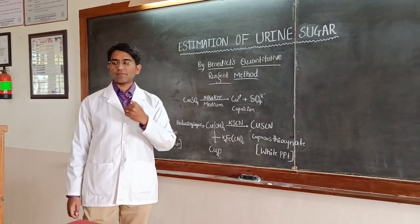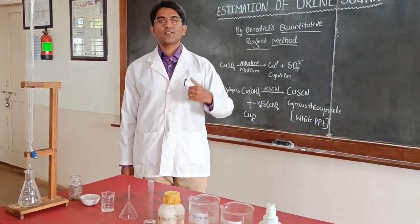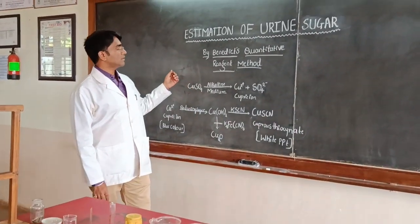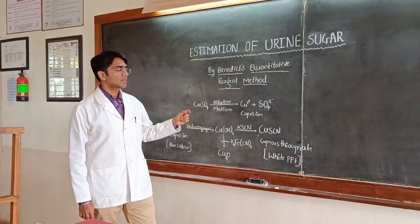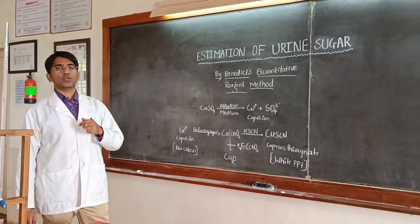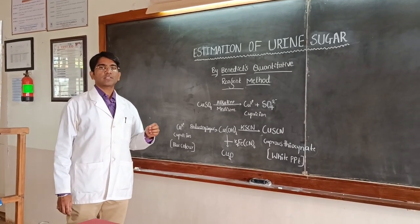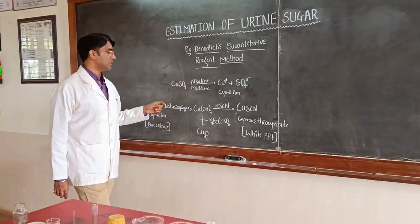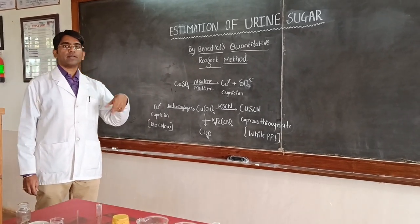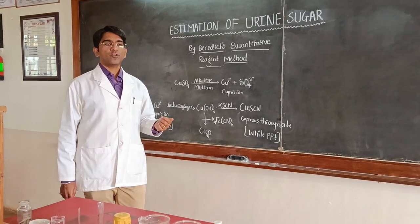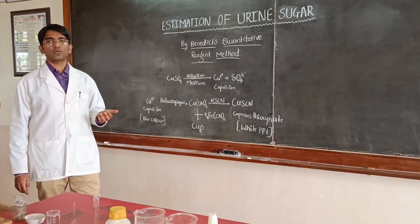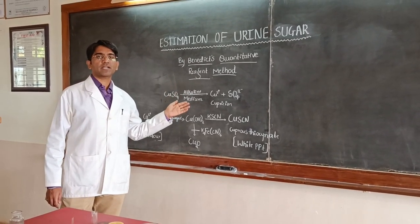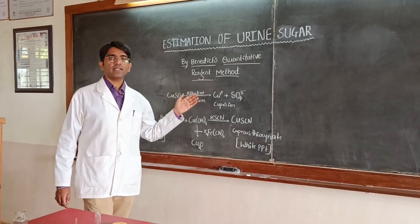Coming to the principle involved in Benedict's quantitative reagent method for identifying urine sugar: in this method, the reducing property of glucose is made use of. The glucose present in the urine sample reduces copper sulphate to cuprous oxide. This cuprous oxide produced further reacts with potassium thiocyanide, where it is converted to a white chalky precipitate when the last traces of copper sulphate get converted to cuprous thiocyanide. There will be a transformation of colour from blue to white, which is considered the end point in the titration.